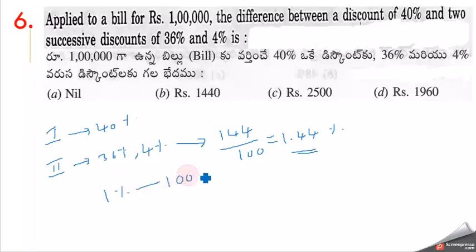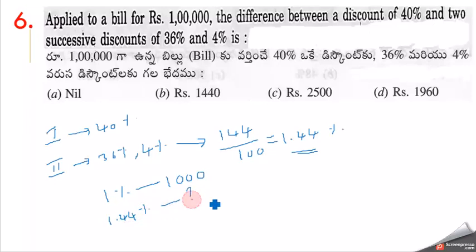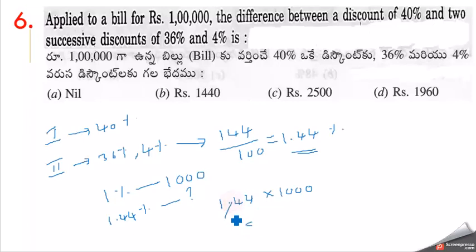The 40% cancels out, leaving the difference as 1.44%. For a bill of 1,00,000 rupees, 1% equals 1000 rupees. So 1.44 into 1000 equals 1440 rupees. The answer is 1440.